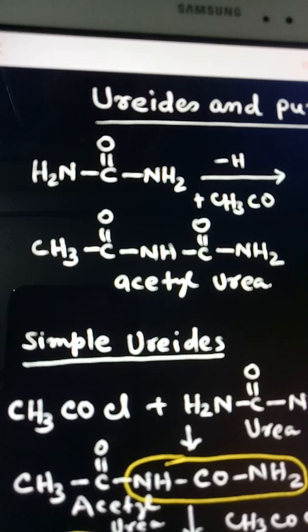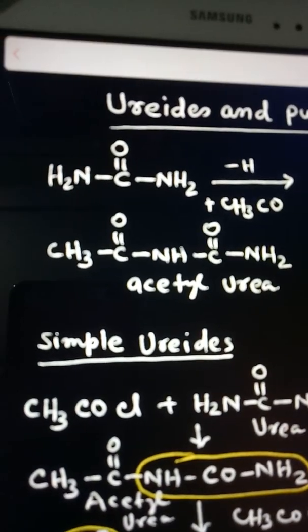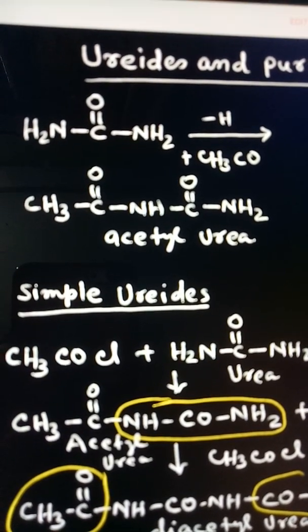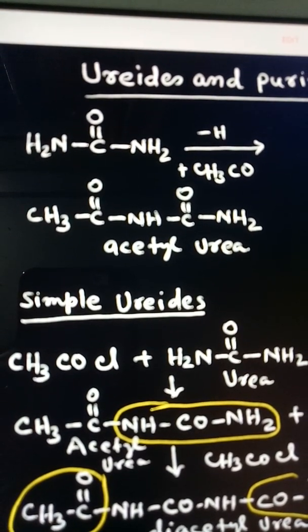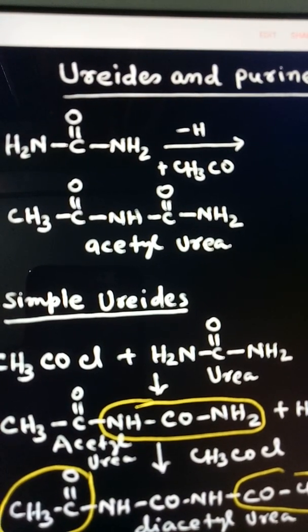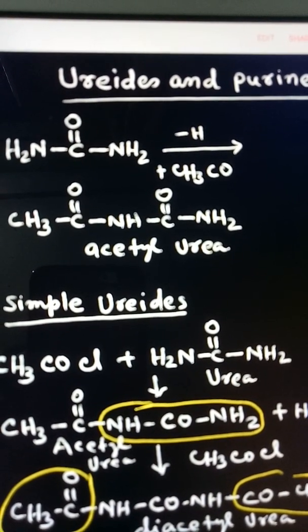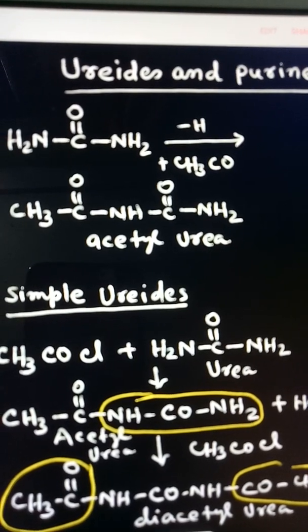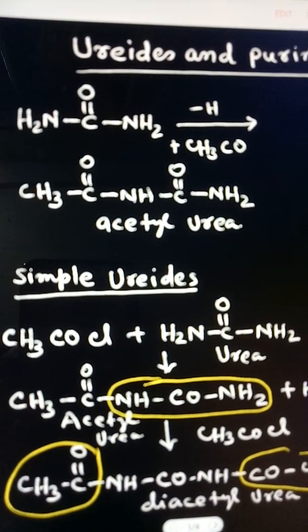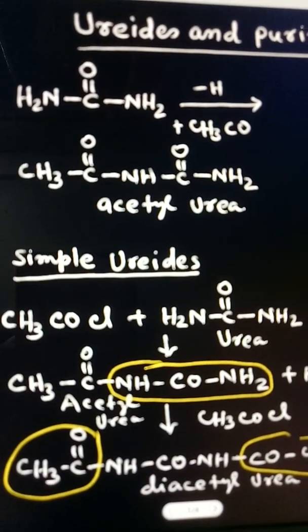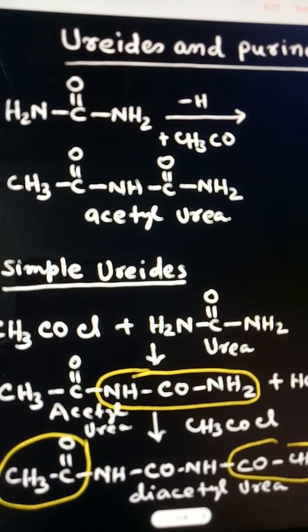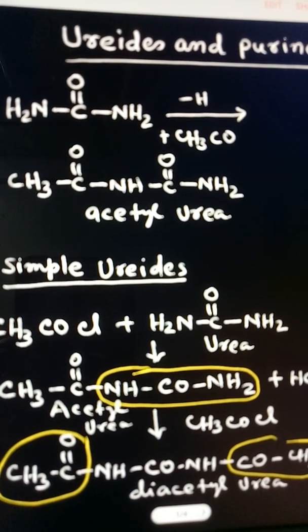So ureides are classified into two groups: simple ureides or open chain ureides, and second, cyclic ureides.